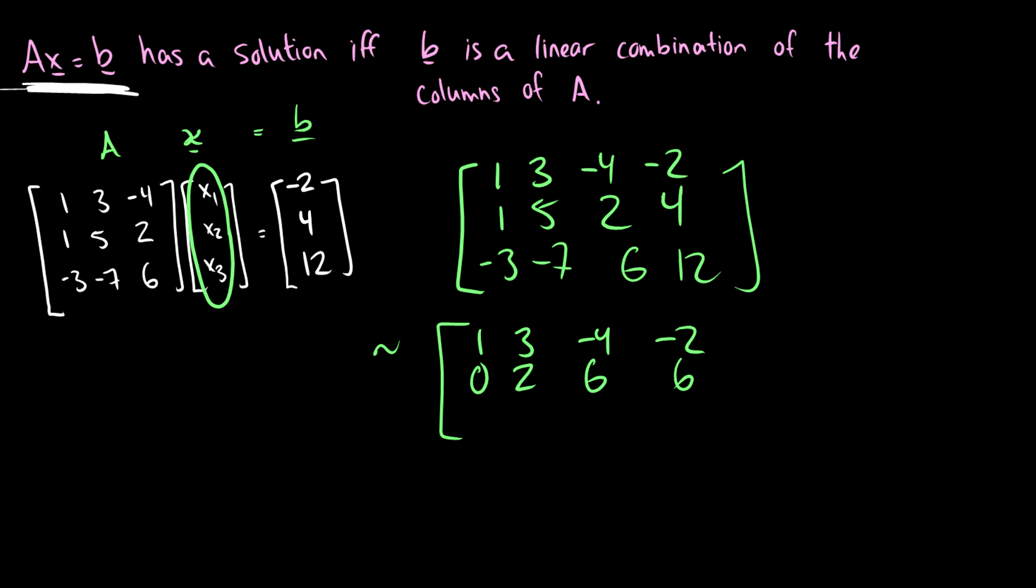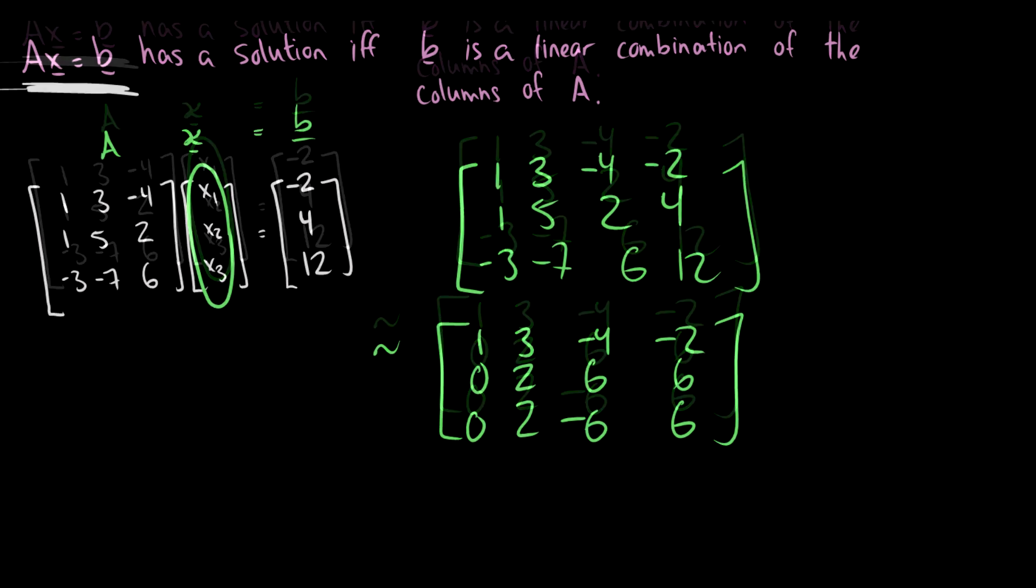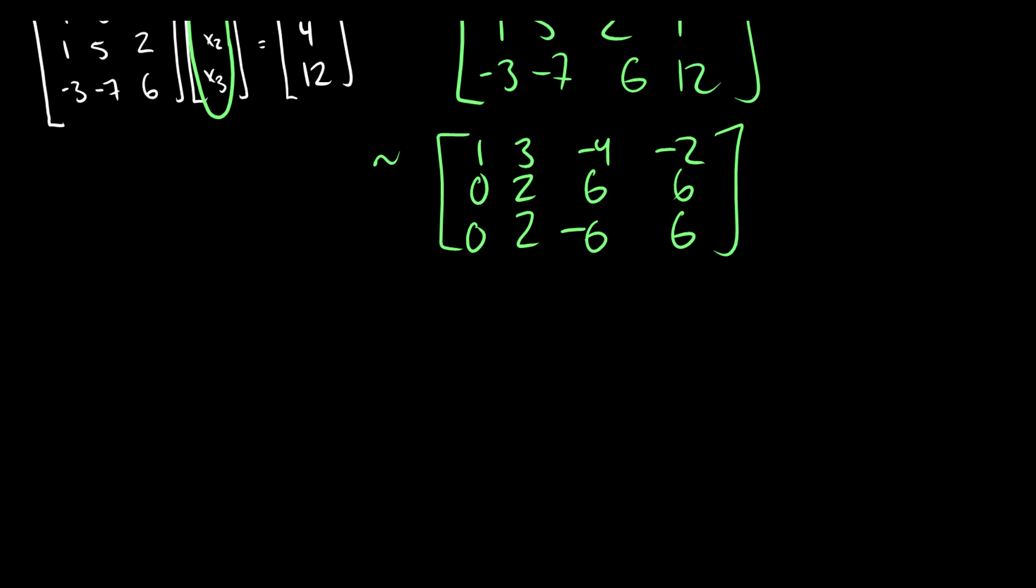And for the third row, we can add three of the first row. So negative 3 plus 3 is 0, negative 7 plus 9 is 2, 6 plus negative 12 is negative 6 and 12 plus negative 6 is 6.